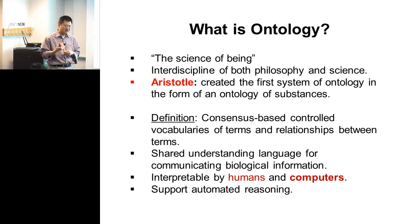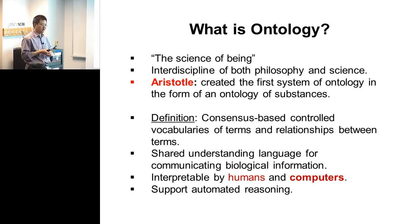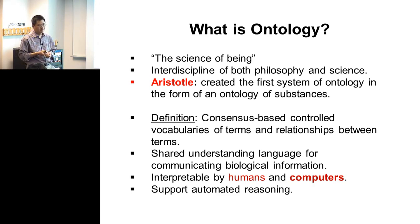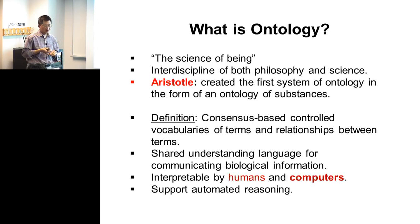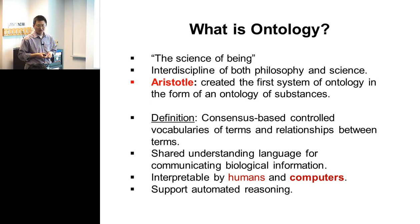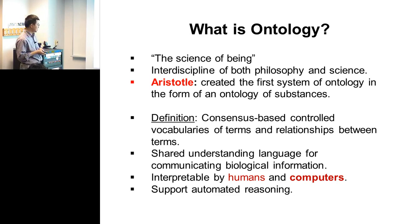Gene ontology was just released around 2000 and now thousands of people are citing it. From the huge success of gene ontology, we are looking for all kinds of ontologies to support different areas of research, which I'll introduce more of later.